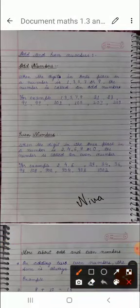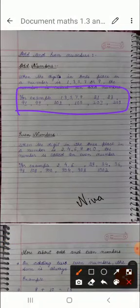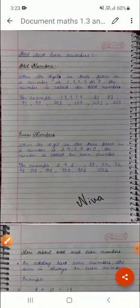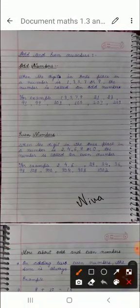Now odd numbers are those numbers which cannot be divided equally between two people or two persons. So see with the help of examples, there are two persons. Suppose there are two persons.